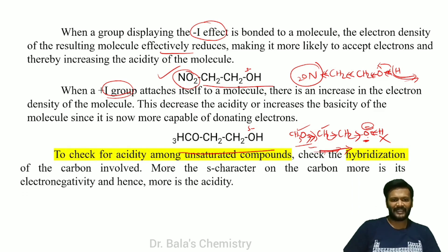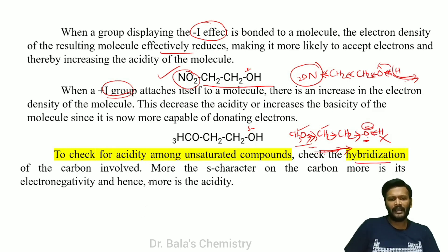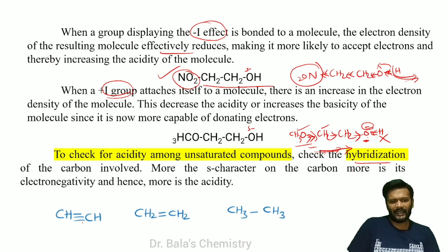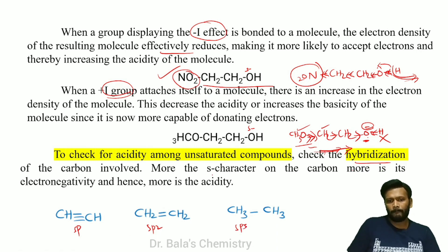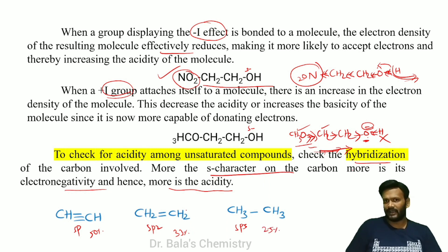To check acidity among unsaturated compounds, check the hybridization. SP hybridized carbon is more acidic than SP2, which is more acidic than SP3. More S character means more electronegativity, which means more acidic. SP has 50% S character, SP2 has 33% S character, SP3 has 25% S character. So SP hybridized compounds are the most acidic.